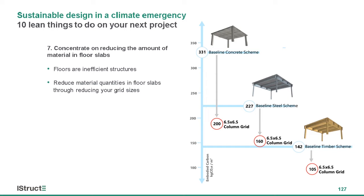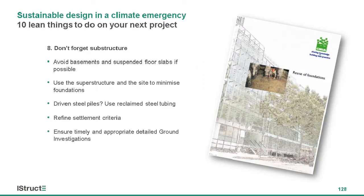Number seven: we want to reduce the amount of material in our floor slabs. Floors are inefficient structures — sensitivity studies show it's all about reducing material in your floor slabs. You can do this through reducing your loadings but also potentially reducing your grid sizes. These are savings made for concrete, steel, and timber schemes going from a nine-by-nine grid down to a six-and-a-half by six-and-a-half column grid. I've been in discussions with the British Council of Offices — larger floor areas are needed for many reasons, but we can find the balance if we talk to each other.